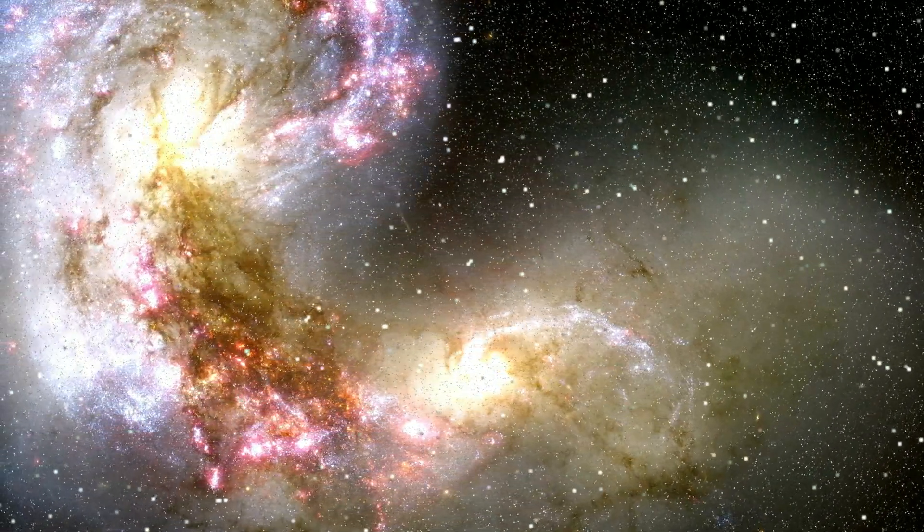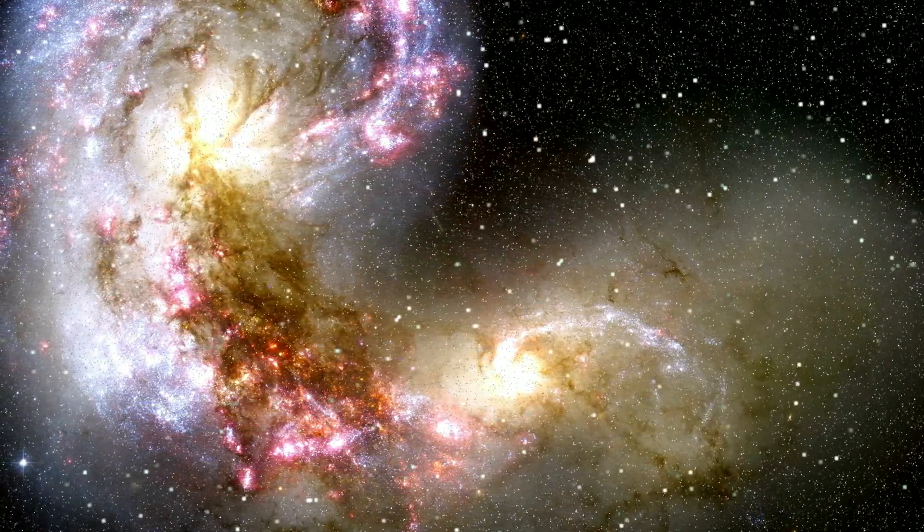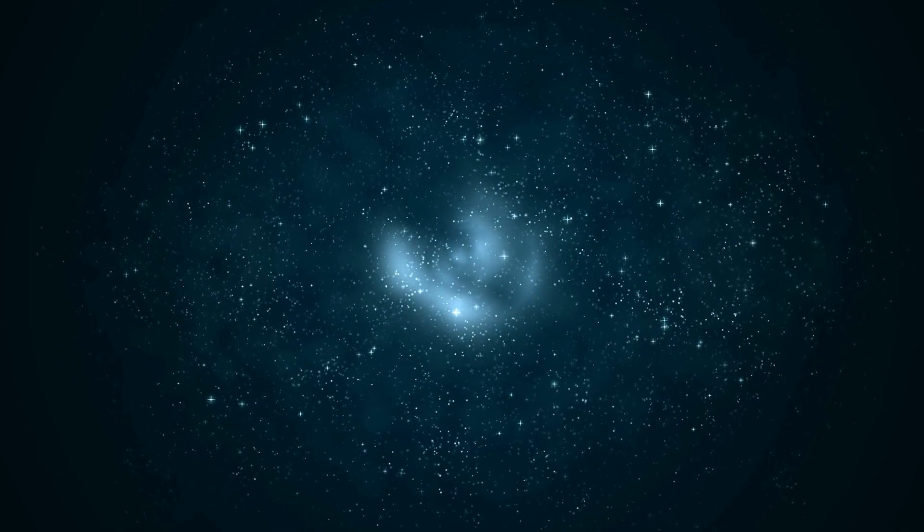Although dark matter remains invisible to our direct observation, its presence affects the light emitted by distant galaxies. This phenomenon, known as gravitational lensing, can be detected by Euclid.